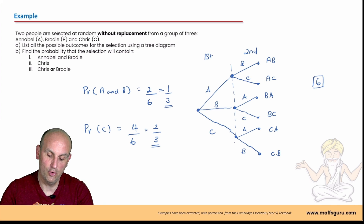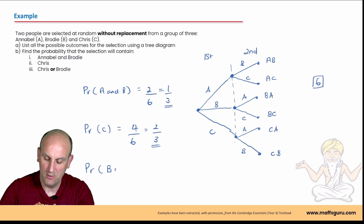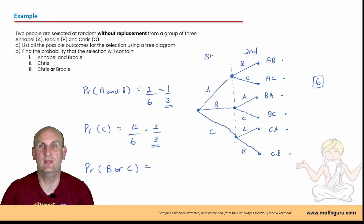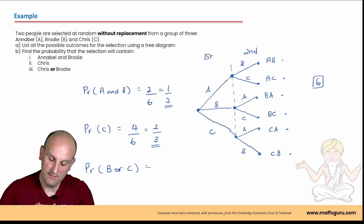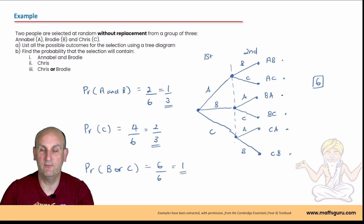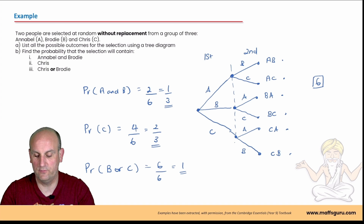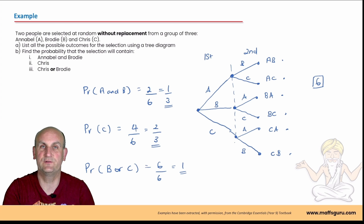Find the probability the selection contains Brody or Chris. Looking at all outcomes, every single one contains either Brody or Chris. So that's six out of six, which equals one — it is certain. This makes sense because the only way neither Brody nor Chris would appear is if Annabelle was selected twice, which isn't possible without replacement.